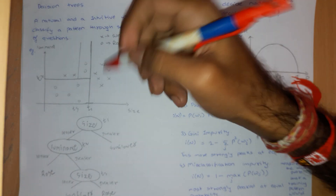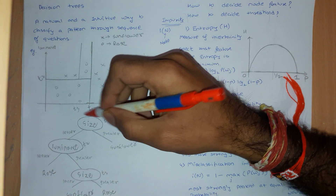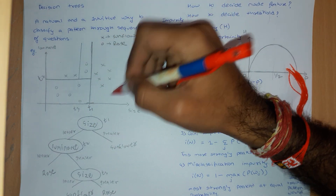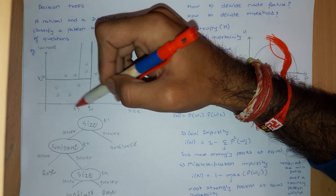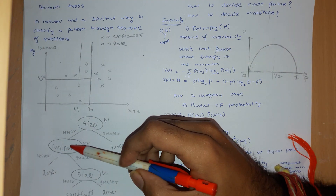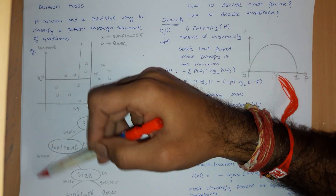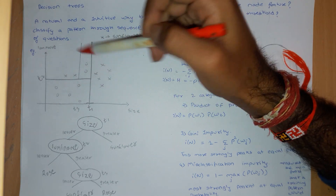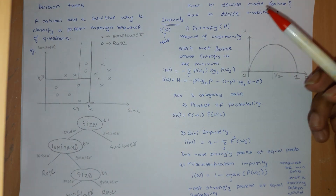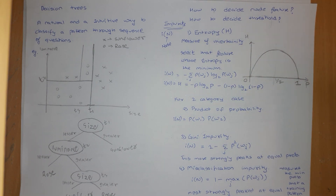Now let us see how the machine implements this algorithm. Going through it once: if I choose size as the first variable and the threshold, samples greater than the threshold are all sunflowers; samples less give a mixture. I choose luminance on the second split — less than the threshold gives all roses, greater gives a mixture — so I take a size threshold again and both are separated. Now I have two questions: first, how to decide the node feature; second, how to decide the threshold.